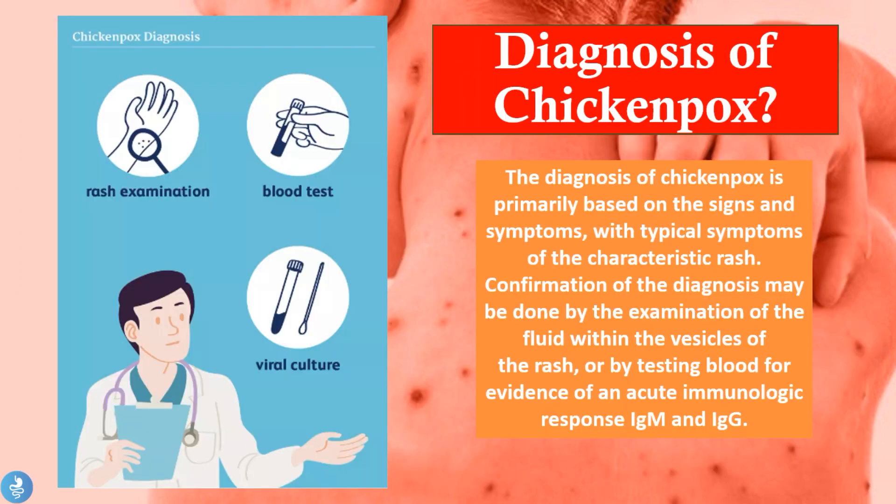The diagnosis of chicken pox is primarily based on the signs and symptoms, with typical presentation of the characteristic rash. Confirmation of the diagnosis may be done by examination of fluid within the vesicles of the rash, or by testing the blood for evidence of an acute immunological response, which includes testing for IgM and IgG antibodies.